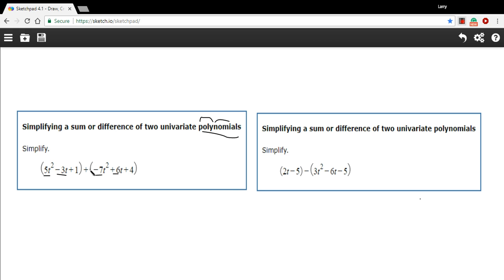First, I have 5t-squared plus negative 7t-squared. That comes out to negative 2. 5 plus a negative 7 is a negative 2t-squared. Then we have a negative 3t plus 6t. That's a positive 3t.